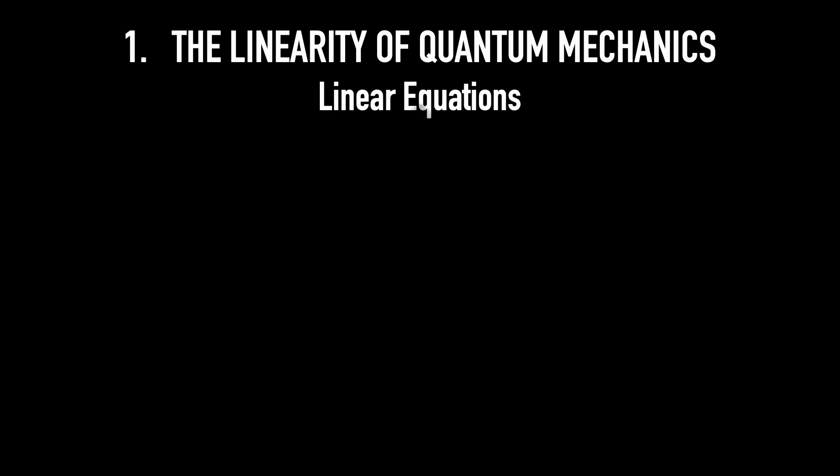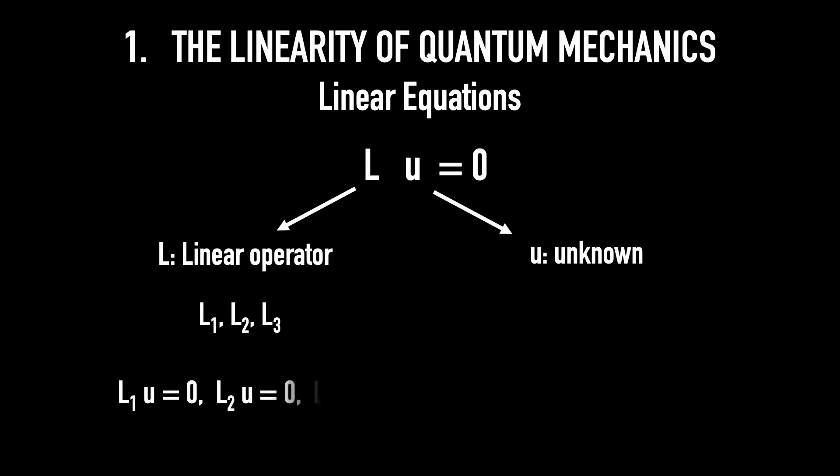Linear equation. A linear equation is written as L of U equals 0, where U is the unknown and L is a linear operator. If you have several operators, L1, L2, L3, and so on, you will have several equations: L1 of U equals 0, L2 of U equals 0, L3 of U equals 0, and so on. If you have multiple unknowns, such as U, V, W, etc., the equation may take the form L of U, V, W equals 0.